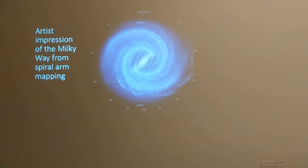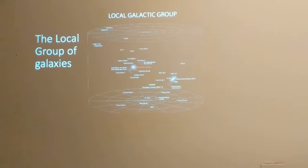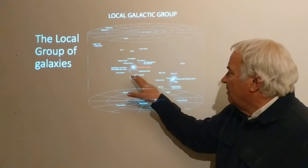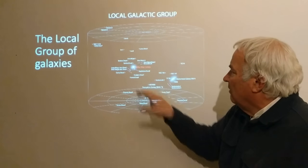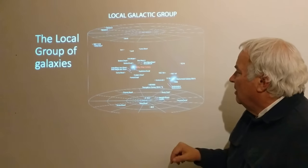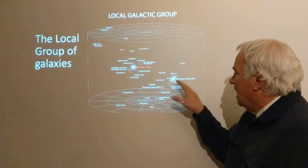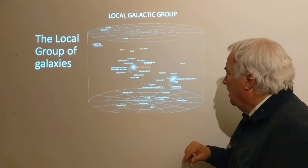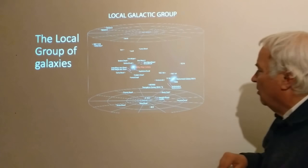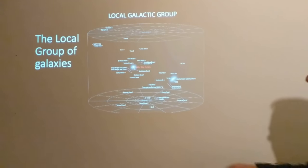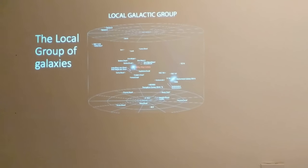Now we want to focus on the local group. This diagram shows we have the Milky Way galaxy, then the LMC and SMC — the Magellanic clouds — and a number of other galaxies. Then there's the Andromeda galaxy with some galaxies around it, and also M33, the Triangulum galaxy. Those are the three largest galaxies, with the Milky Way and Andromeda being the largest.